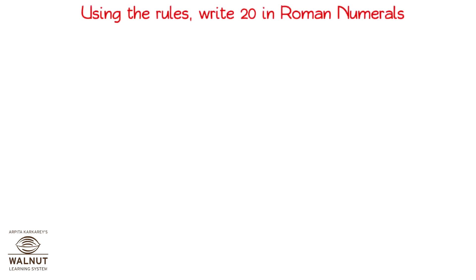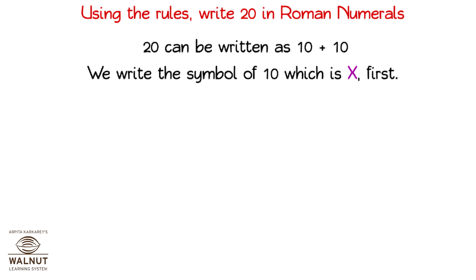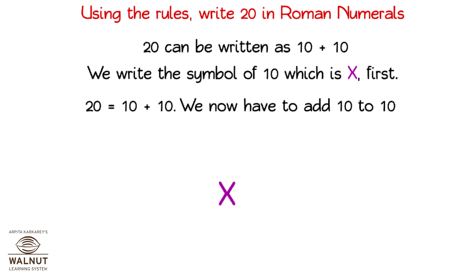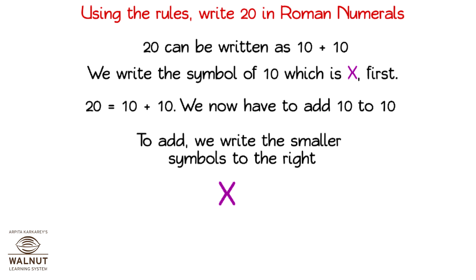Using the rules, write 20 in Roman numerals. 20 can be written as 10 plus 10. We write the symbol of 10, which is X, first. We now have to add 10 to 10. To add, we write the smaller symbols to the right: 2 X's. That is our answer.